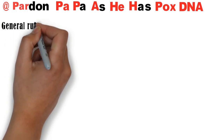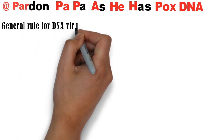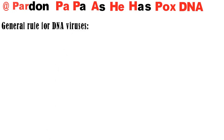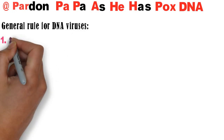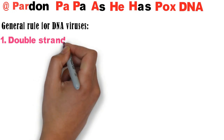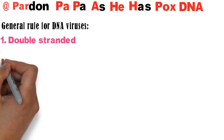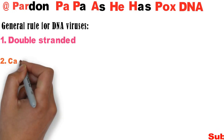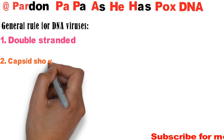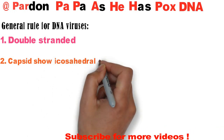Now let's learn some general rules for DNA viruses. First rule: most DNA viruses are double-stranded. Second rule: most DNA viruses have icosahedral symmetry.